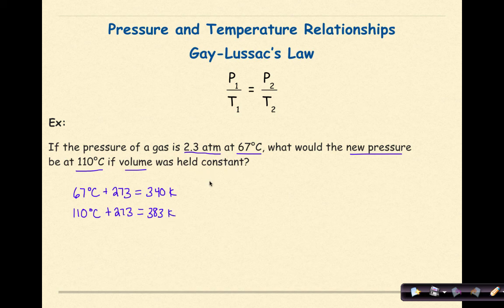Then I'll write my formula: P1 over T1 is equal to P2 over T2. Let's take the information given to us in the problem and plug it into our formula. The pressure of a gas is 2.3 atmospheres, that's my P1.